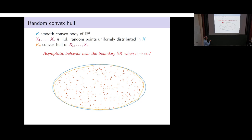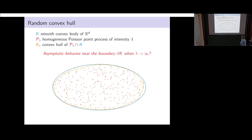Can you do a close-up near the boundary of the smooth convex body and look at the fluctuation of the random interface, which is in orange, close to the boundary of K itself? You can also replace the N points by a Poisson point process — instead of taking a fixed number of points, you take a Poisson number of points and then, conditional on that number, you take IID uniformly distributed points inside the convex body. You get almost the same result.